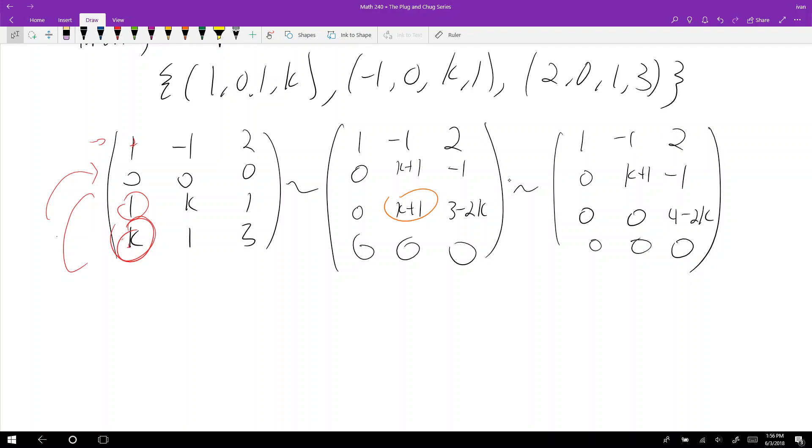We need to have three pivots, right? We need to have three pivots. So what values of K make it so that I don't have three pivots? Well, it happens when this guy is zero or this guy is zero.